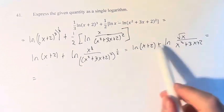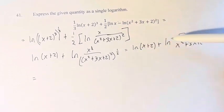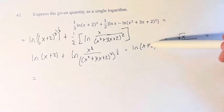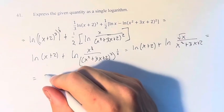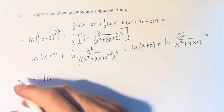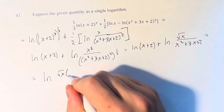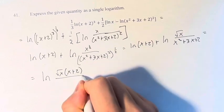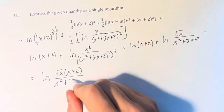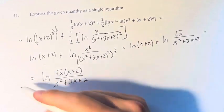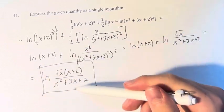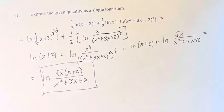And finally we can combine these two. When you are adding two logs of the same base you can multiply what's inside them within a single log to the natural log of the square root of x times x plus 2 over x squared plus 3x plus 2. And this is the original quantity as a single logarithm.